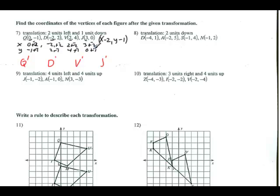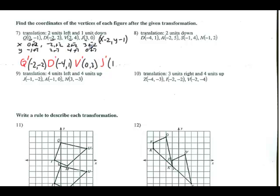Using same-change-switch to handle subtraction: 0 minus 2 gives negative 2 for that X; negative 2 plus negative 2 gives negative 4; 2 plus negative 2 gives 0; 3 plus negative 2 gives 1. For the Y's: negative 1 plus negative 1 gives negative 2; 2 plus negative 1 gives positive 1; 4 plus negative 1 gives 3; and 0 plus negative 1 gives negative 1. Those are my new post-image coordinates.